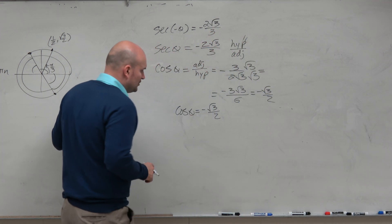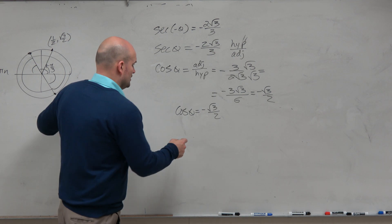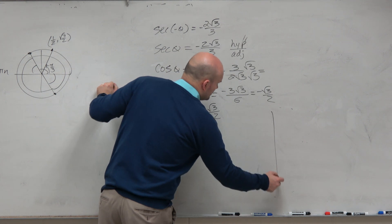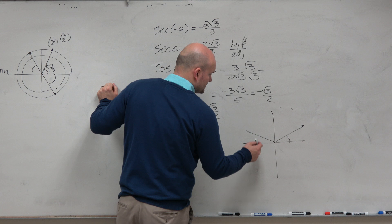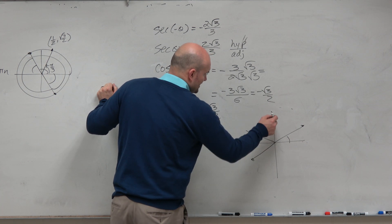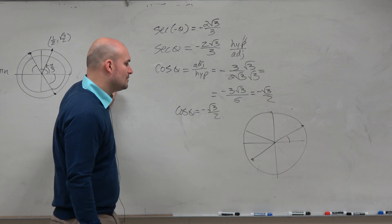So to use the unit circle, we've got to think what coordinate point then is going to give us a negative square root of 3 over 2. Hopefully you guys can see on the unit circle that it's pi over 6 is positive square root of 3 over 2.